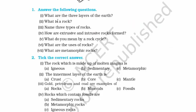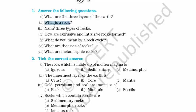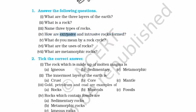Now let's answer some questions. First: What are the three layers of the earth? The three layers are crust, mantle, and core. Second: What is a rock? A rock is made up of minerals that form a natural landmass and is part of the earth's crust. Third: Name three types of rocks — sedimentary, igneous, and metamorphic. Fourth: How are extrusive and intrusive rocks formed? Extrusive means outside and intrusive means inside.